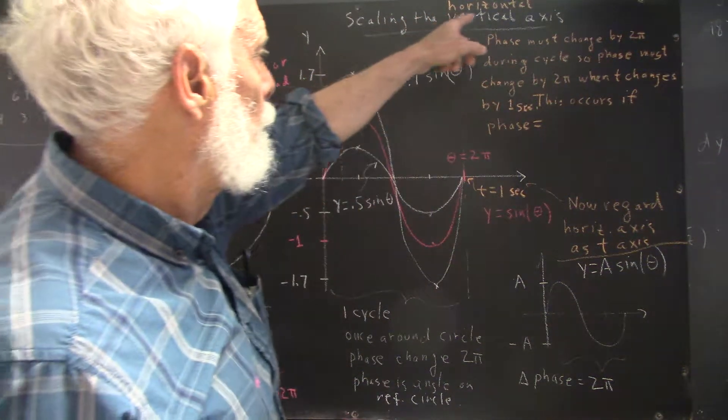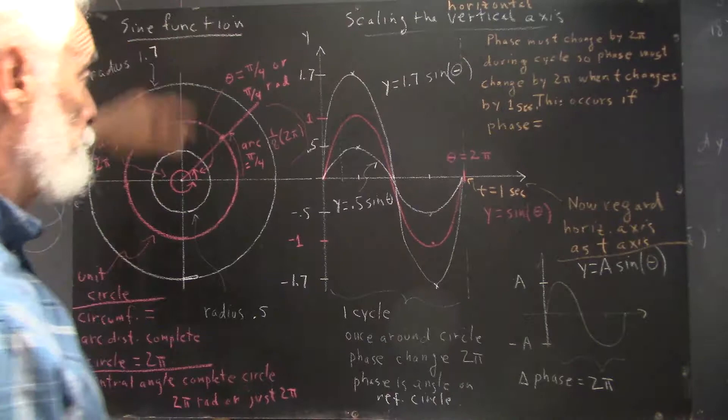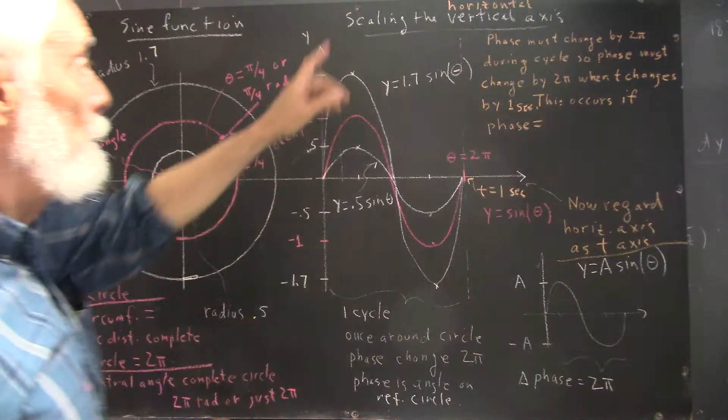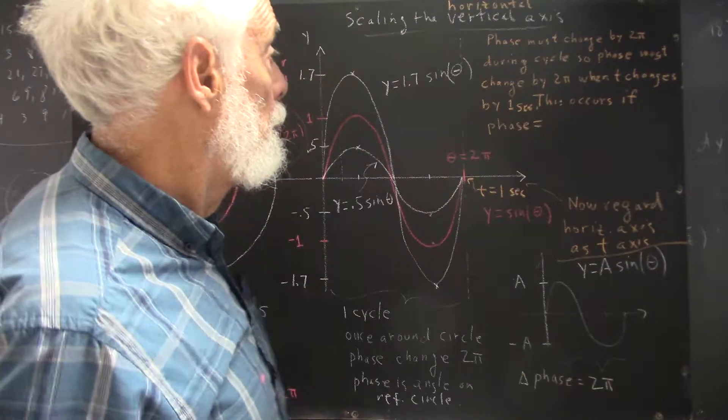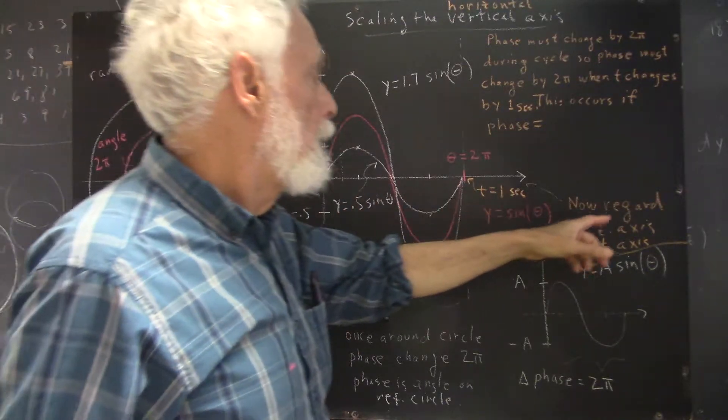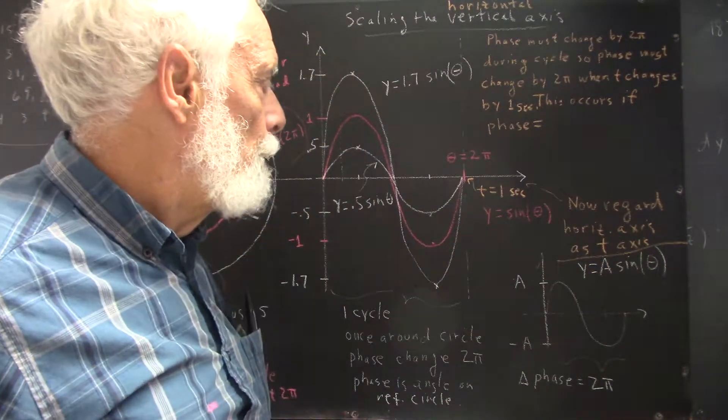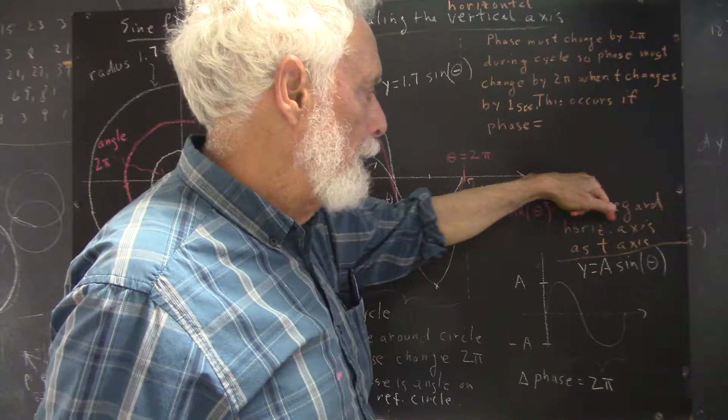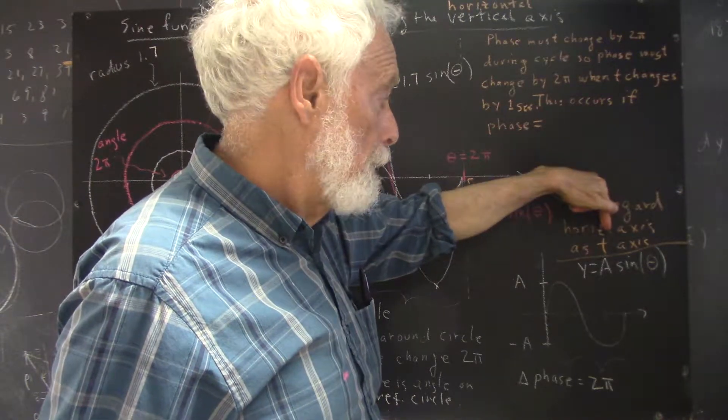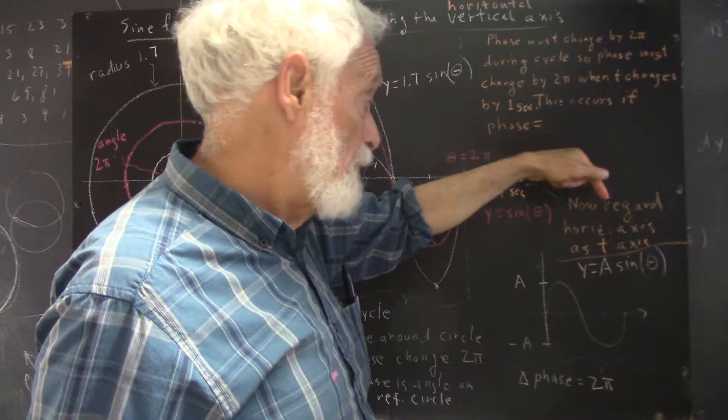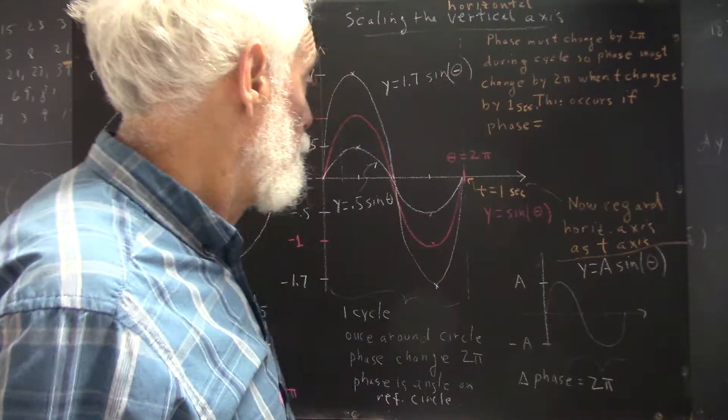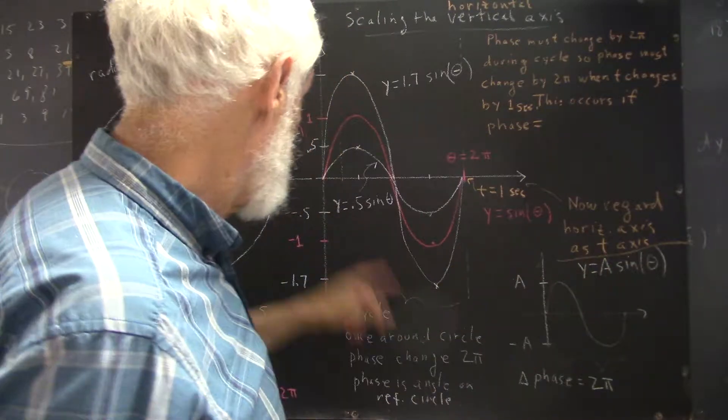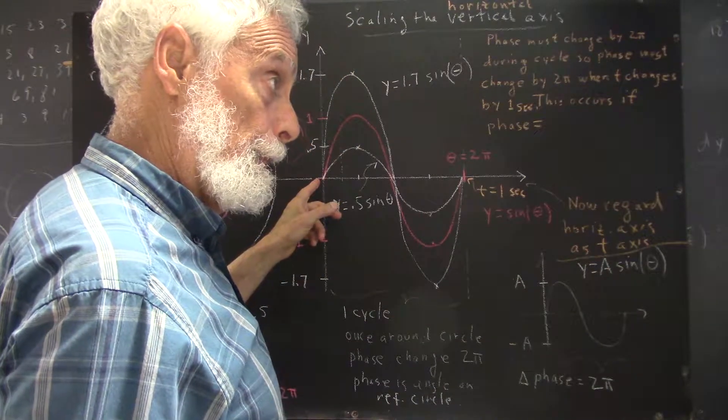Now we've seen how to scale the vertical axis for the sine function. We want to see how to scale the horizontal axis. As an example, we're going to regard the horizontal axis now as the t-axis and we're going to consider t to be clock time, time reading on a clock that starts at zero.